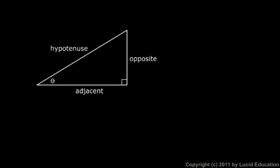We've already said that the tangent of theta is the opposite side divided by the adjacent side. That ratio - there are two other important ratios: the sine of theta is the opposite side divided by the hypotenuse, and the cosine of theta is the adjacent side divided by the hypotenuse.